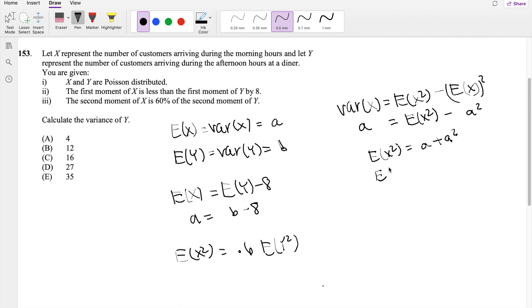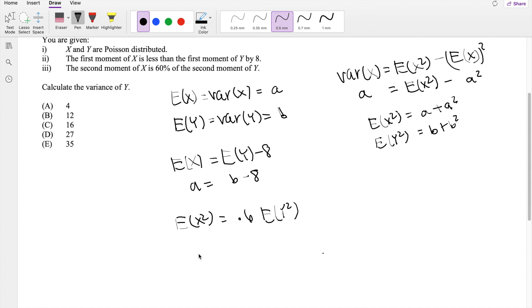And likewise, that's going to be the same for Y squared, the second moment. This is going to be equal to b plus b squared by the same proof we did up there. So this is equal to a plus a squared is equal to 0.6 times b plus b squared.